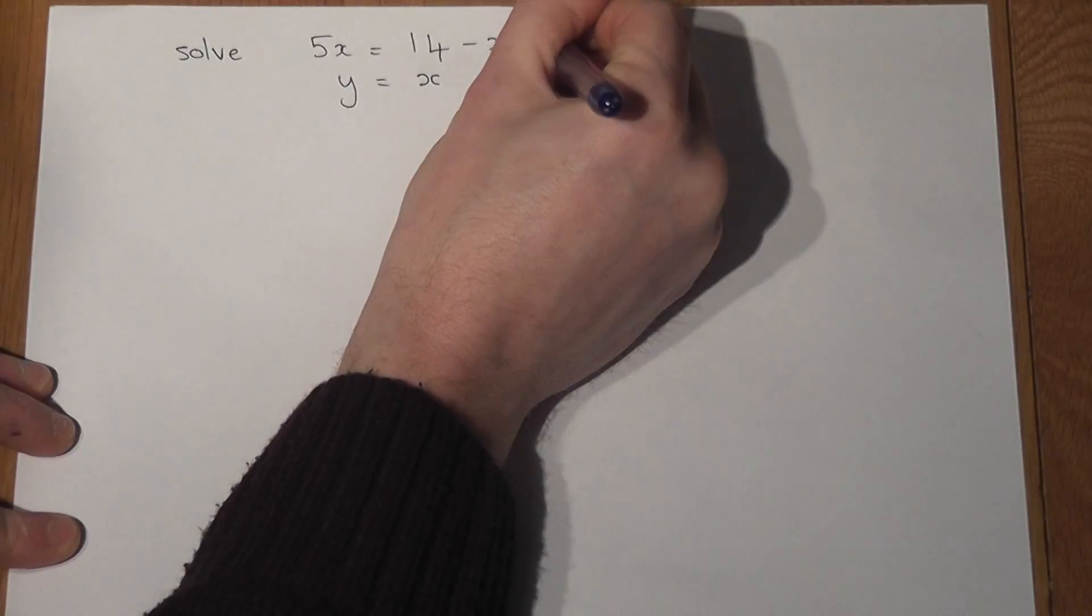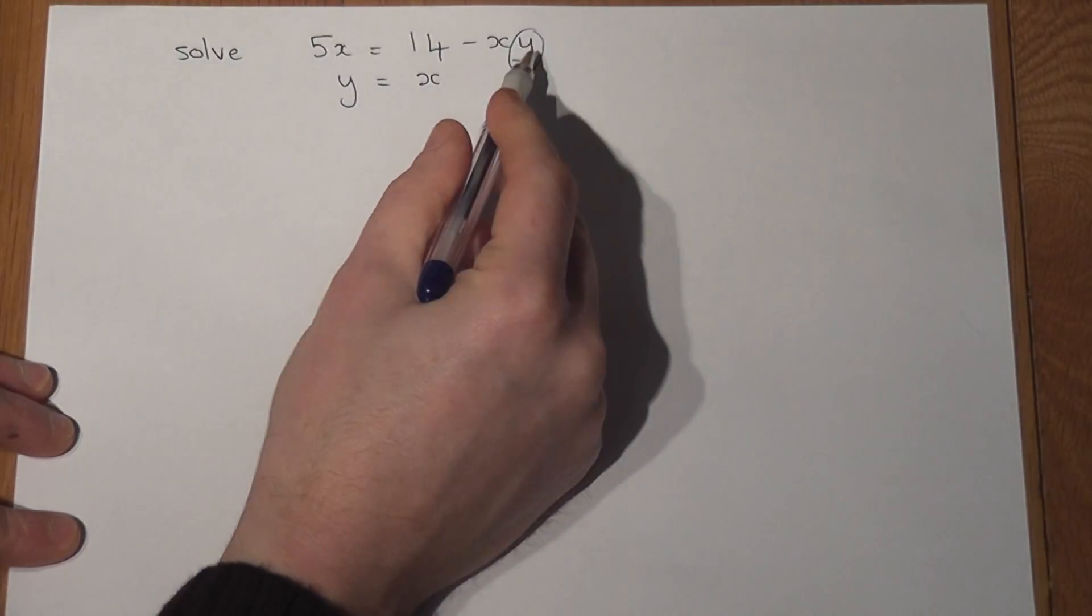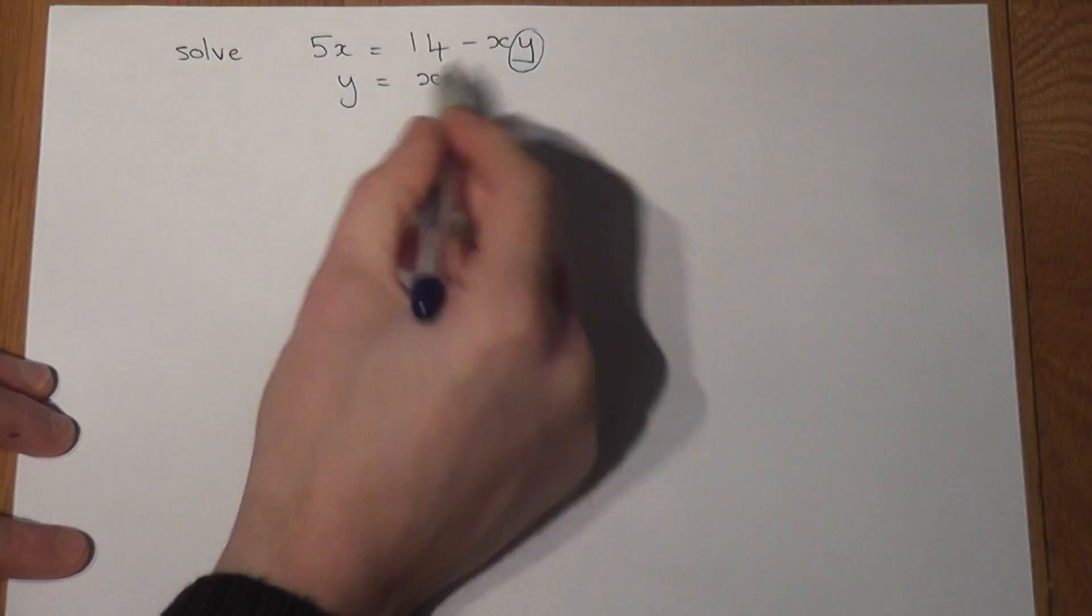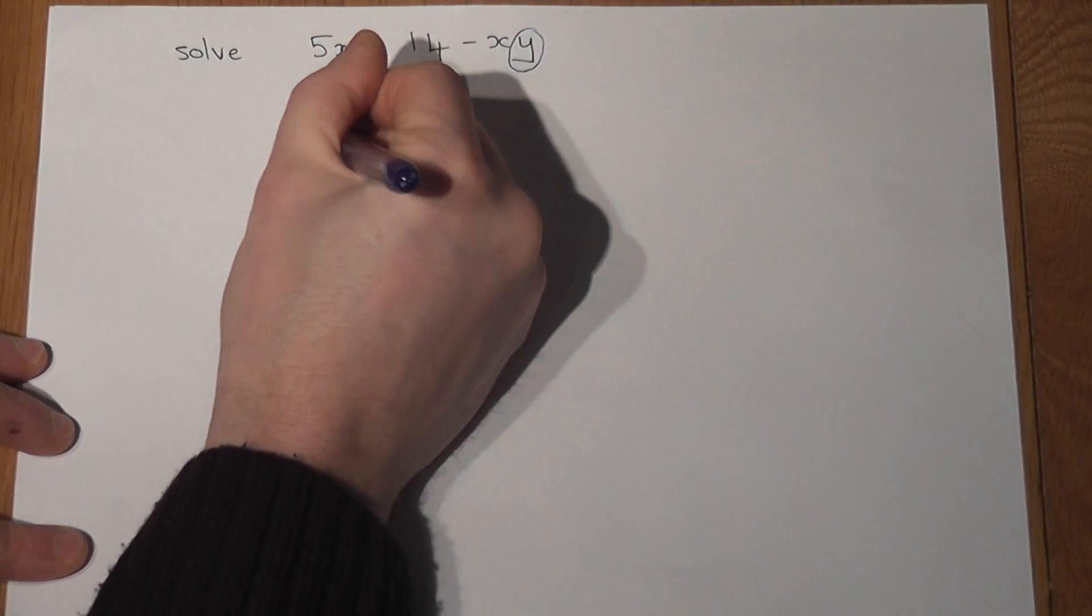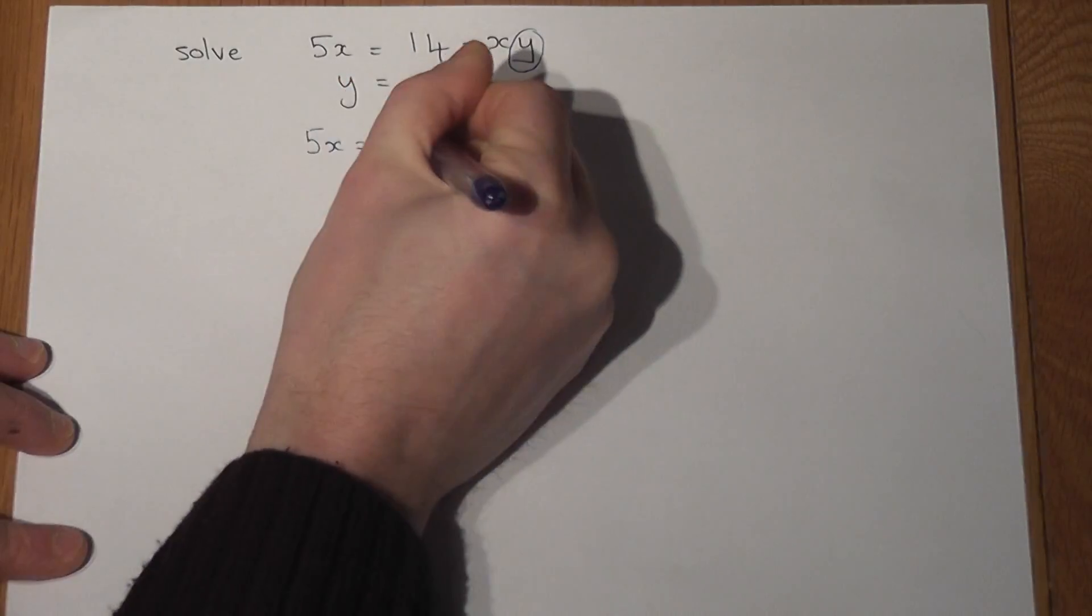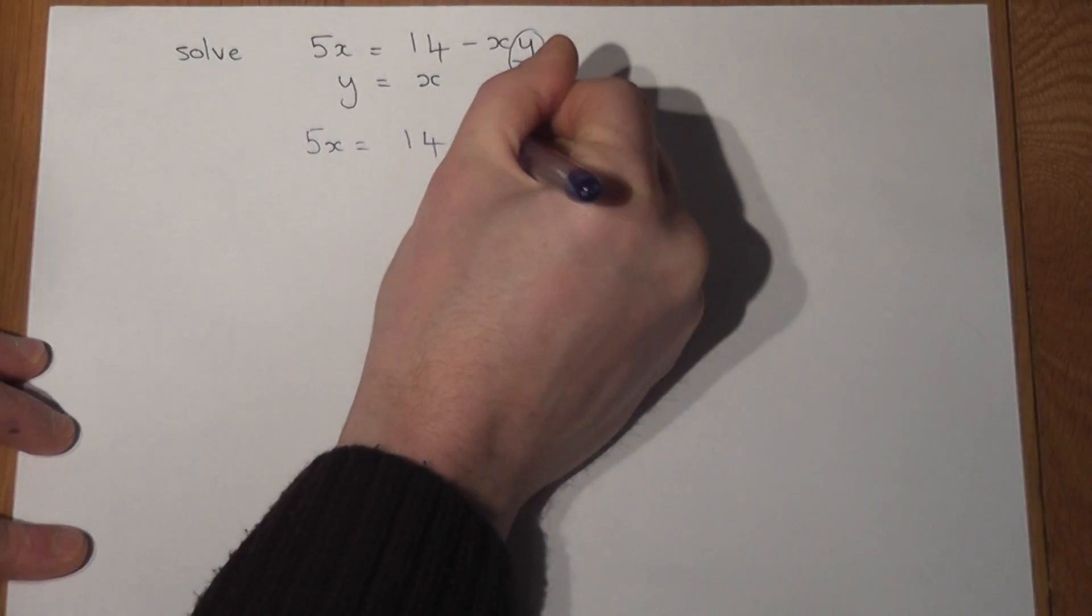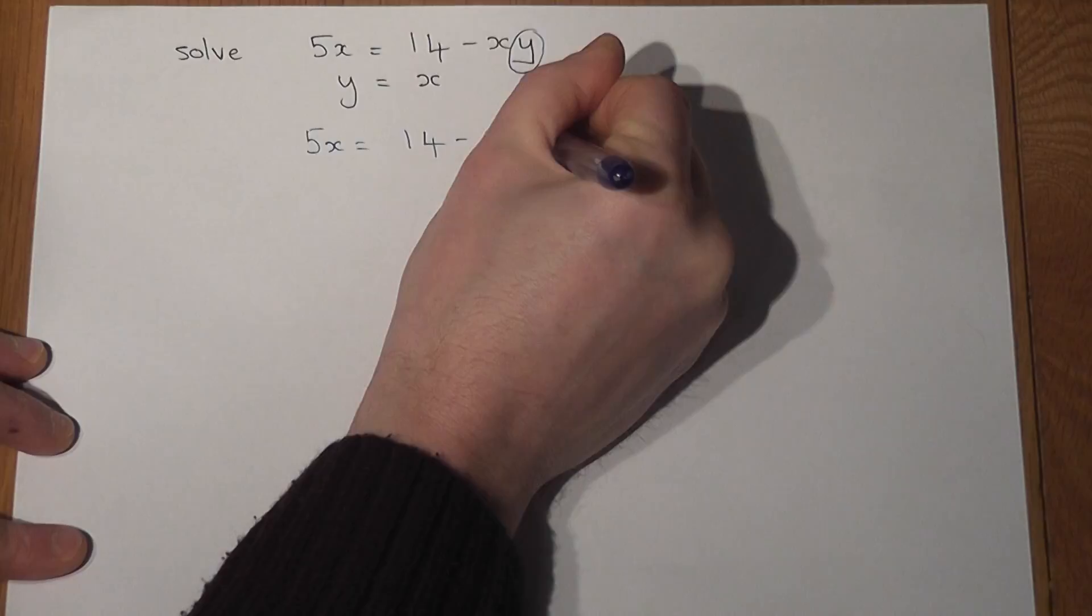This means that I could replace the y in the first equation by an x. So equation 1 becomes 5x equals 14 minus x times x.